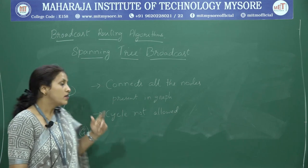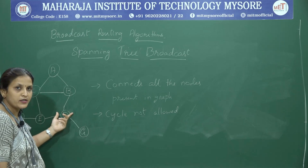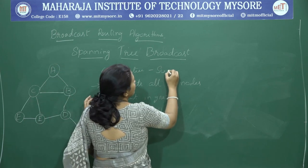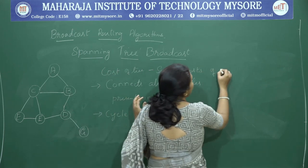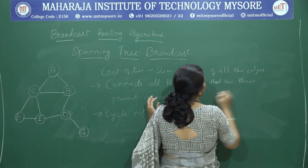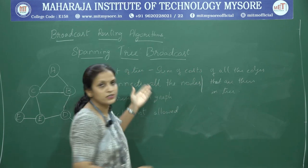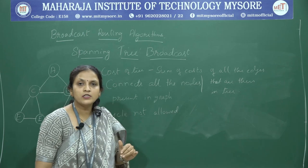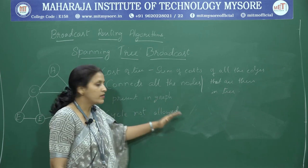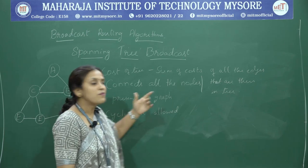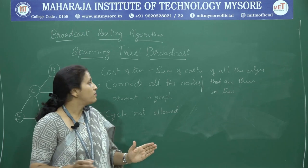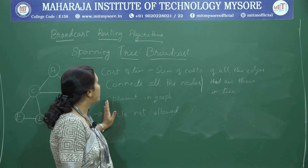What do we mean by minimum spanning tree? For each edge we have a weight, and the cost of a tree is the sum of costs of all edges in the tree. A minimum cost spanning tree connects all nodes in the graph without forming a cycle, and its total cost is the minimum among all possible spanning trees for that graph.